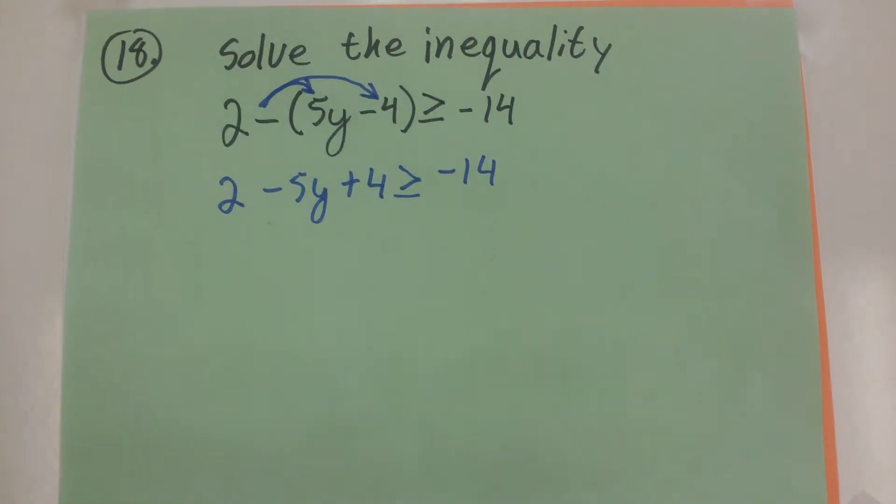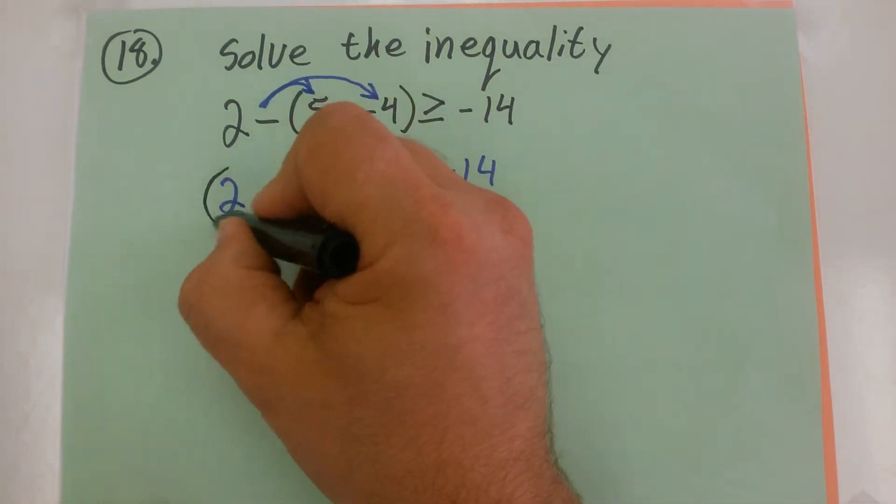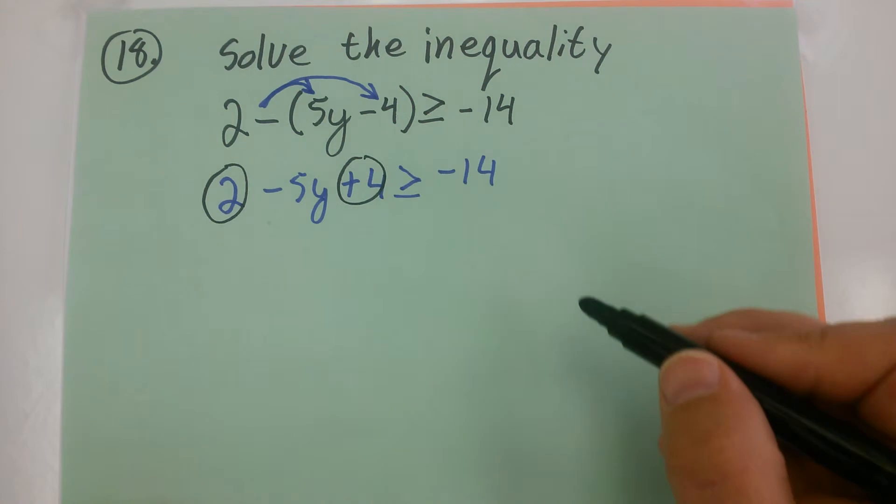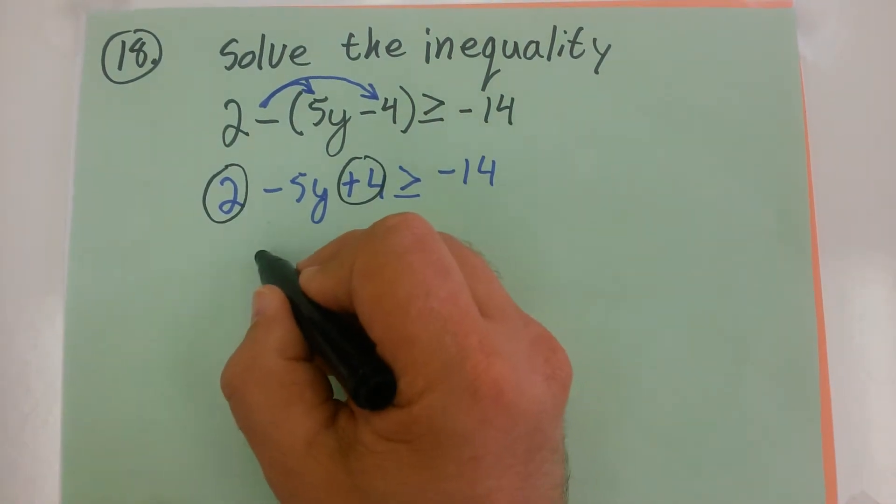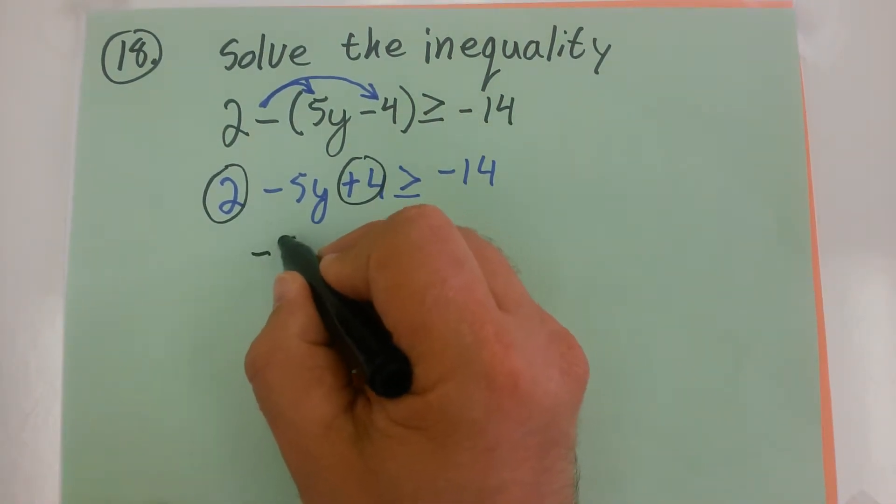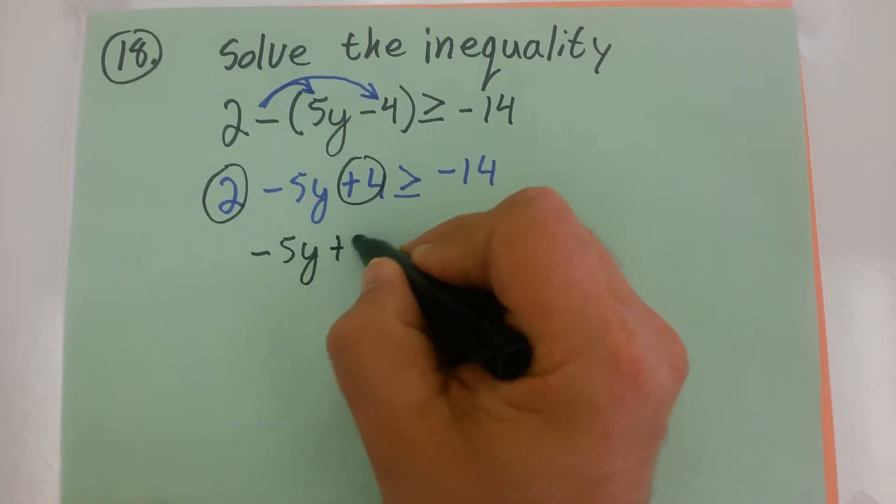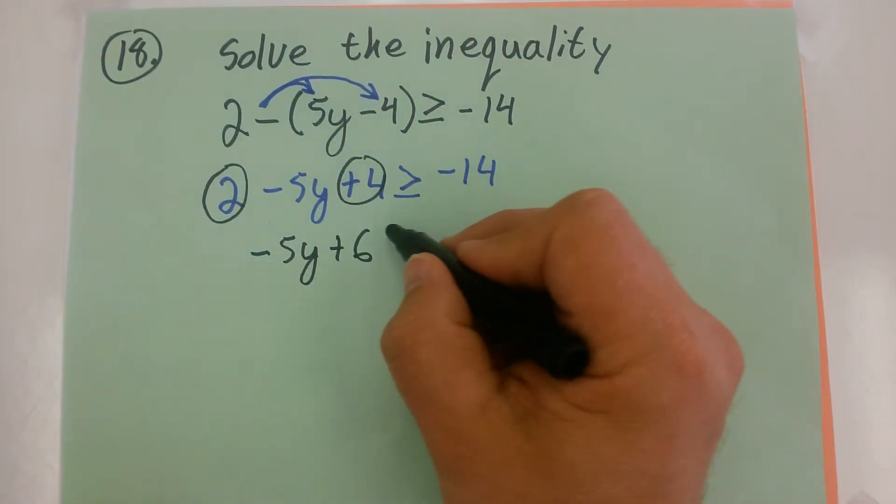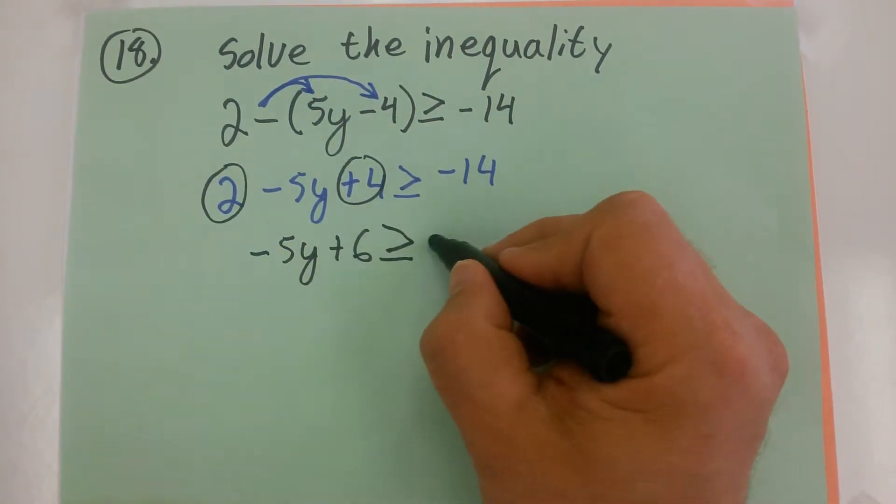Now I'm going to start to combine like terms. I notice I have a 2 and a 4 on the same side. So that's going to add up to equal 6. So this is going to give me negative 5Y plus 6 is greater than or equal to negative 14.